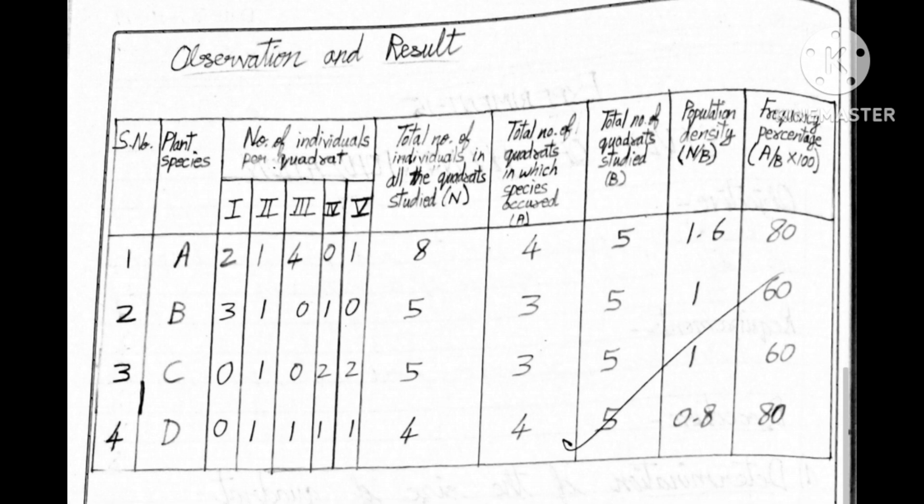Species A we have studied in the first quadrant as 2, in second quadrant 1, in third quadrant 4, and fourth quadrant nothing was observed. That is we put 0 and fifth quadrant 1. Then we have to total up all numbers: 2 plus 1 plus 4 plus 0 plus 1 equal to 8. Total number of individuals in all quadrants studied when you observe total number is 8.